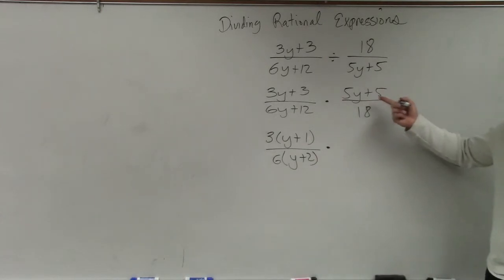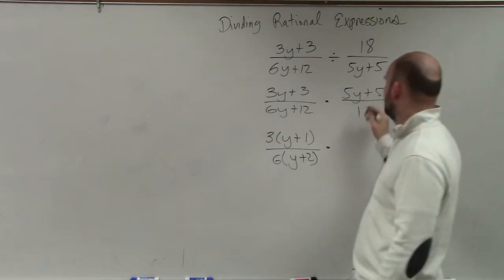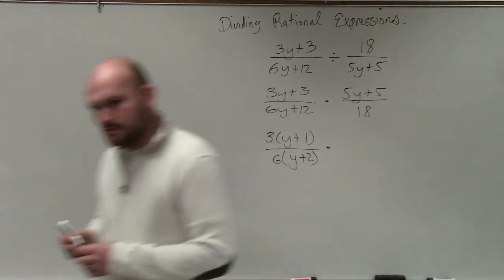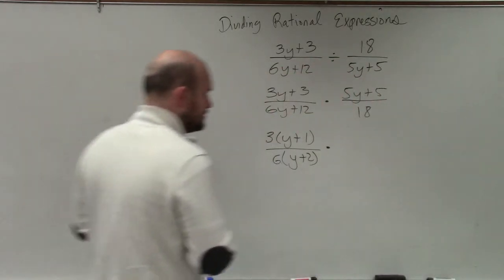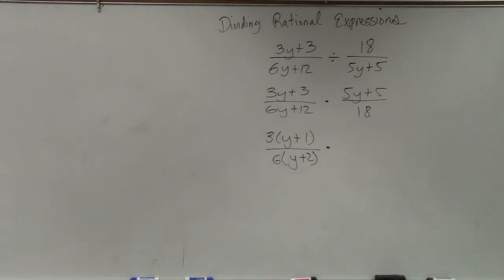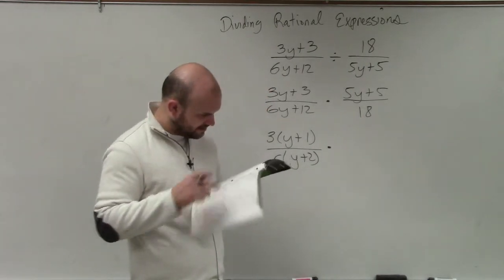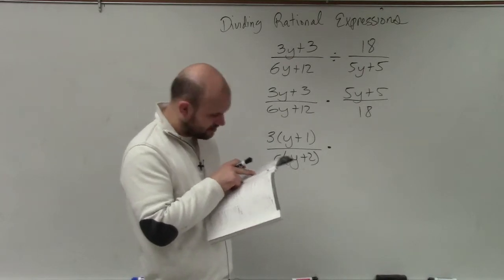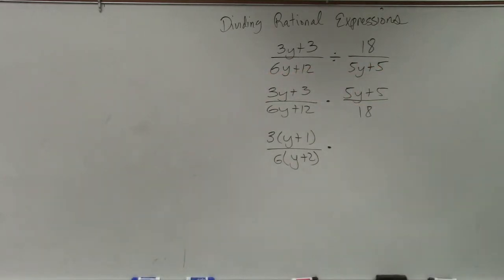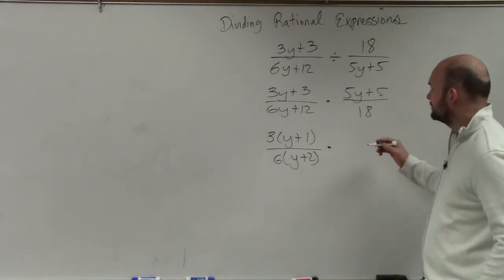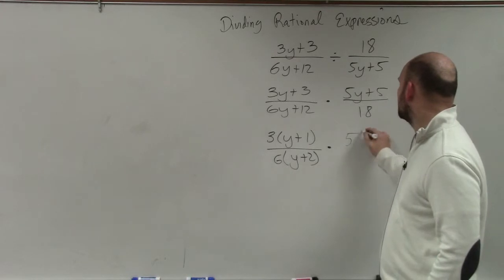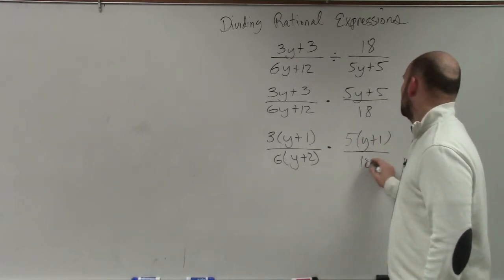Over here, I can factor out a 5. Where did I write this? I just want to verify this. 18 over 5y. OK. So we factor out this one, which would be 5 times y plus 1 over 18.